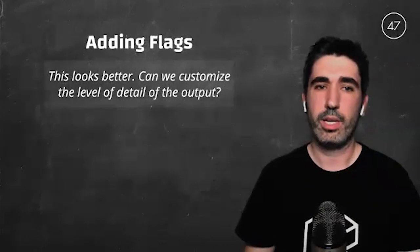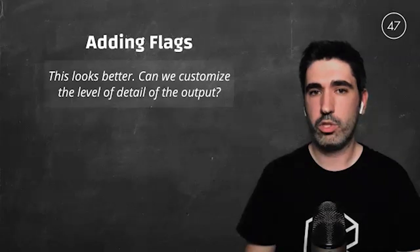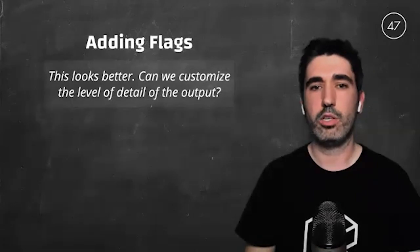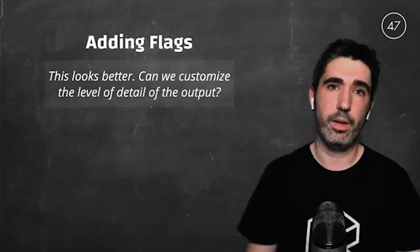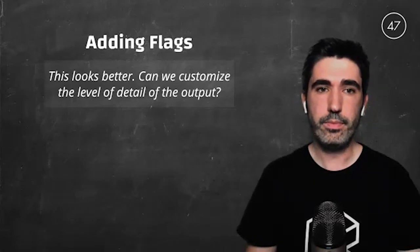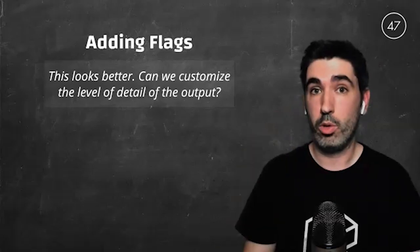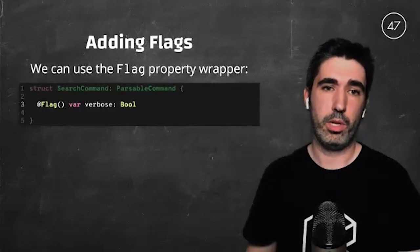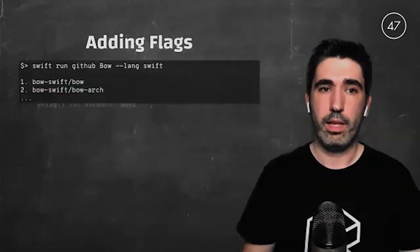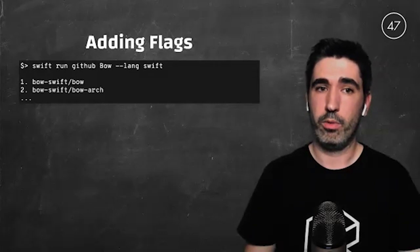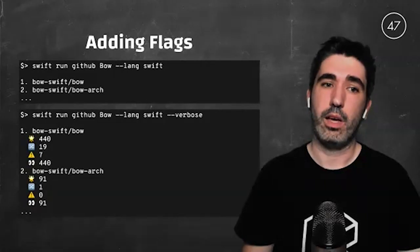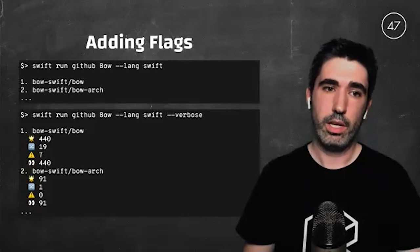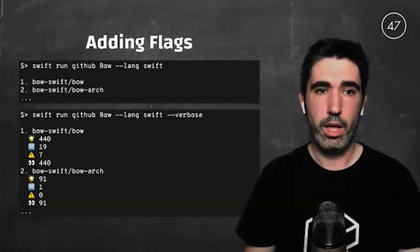Now Pepe wants to customize the level of detail of the output. Sometimes he wants just a summary of search results, and other times he wants further details about the repositories returned. We could create an option with Boolean type, but this is the same as using the `@Flag` property wrapper with a Boolean type. When we omit the flag, we print the non-verbose version. When we add it, it activates — makes it true — and we print the detailed version including statistics about the repositories returned.